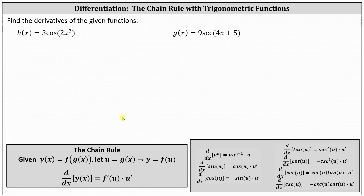Looking at our first example, we have h of x equals 3 cosine of 2x cubed. Whether we use the derivative formula below for cosine u, or recognize the inner function as 2x cubed, we begin by letting u equal 2x cubed. Next, we find u prime, which is equal to du dx. u prime is equal to 6x squared.